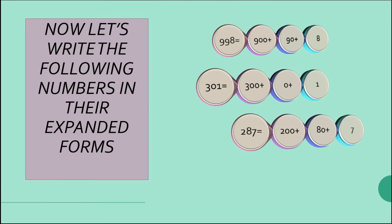Next example is 287. The hundreds place is 2, so its place value is 200. The tens place is 8, so its place value is 80. The units place is 7. So the expanded form is 200 plus 80 plus 7.